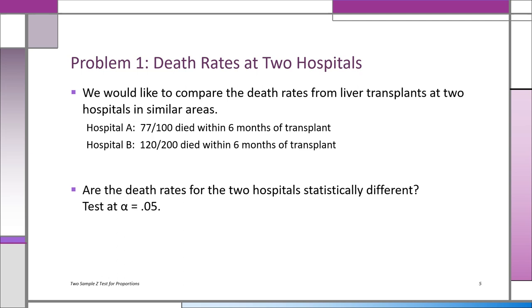Problem number one: we're comparing death rates at two hospitals. We've been looking at liver transplants in two similar hospitals in similar areas, and we notice in Hospital A, 77 out of 100 people died within six months of getting their liver transplant. In Hospital B it's 120 out of 200.